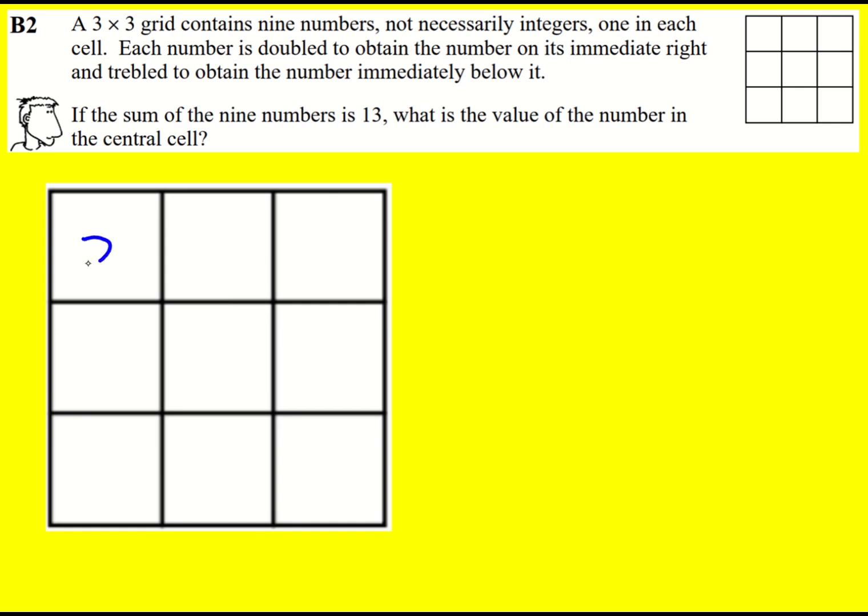I'm going to start by saying that the top left one is x. It's all about getting everything in terms of x. Then we get 2x as we double and 4x as we double again. The sum of these would be 7x.